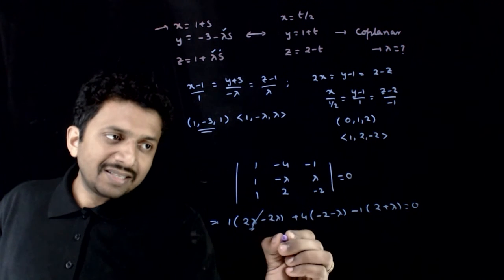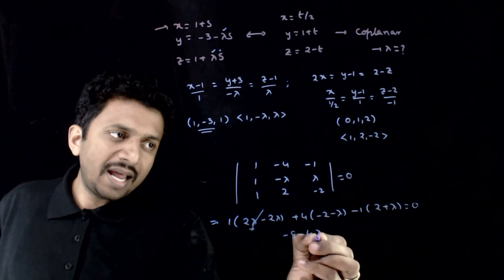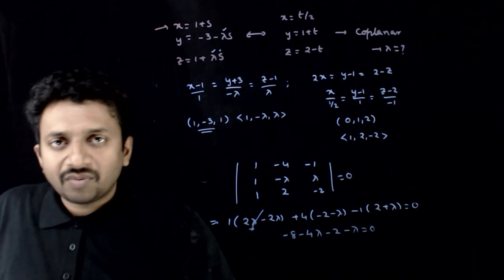This is 0. So, minus 8 minus 4 lambda minus 2 minus lambda is equal to 0.